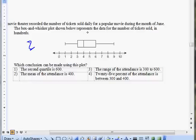Number two: The mean of the attendance is 400. Box-and-whiskers tells you median; it doesn't really talk about mean, so that can't be it. Number three: The range of the attendance is 300 to 600. Range means lowest to highest, or minimum to maximum, and this is from actually 100 through 900, so it's not choice three.